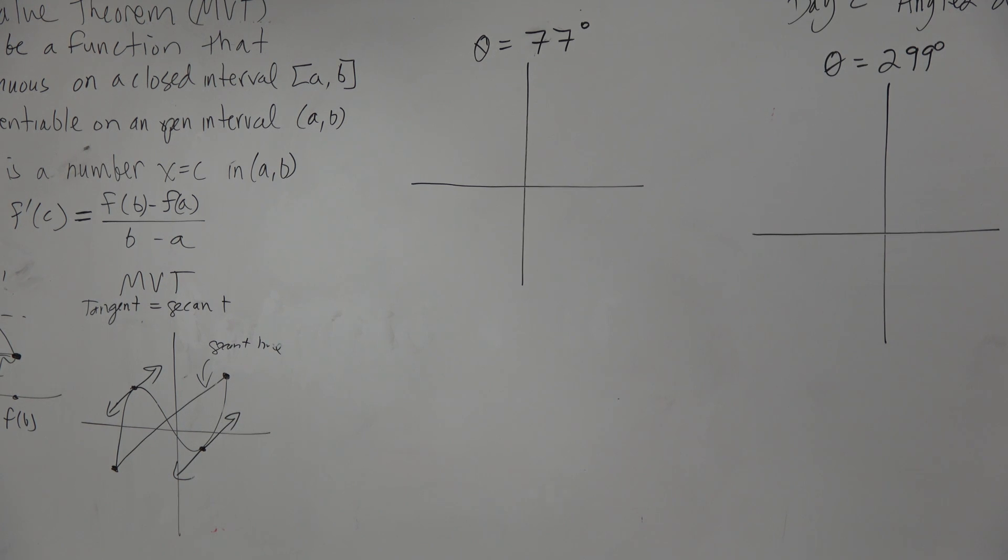All right. So in this first example, guys, we have 77 degrees. How do we graph 77 degrees?